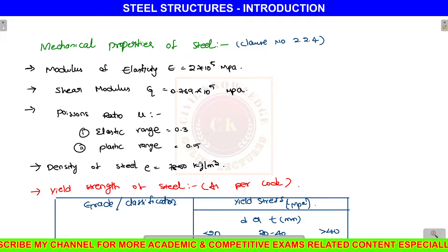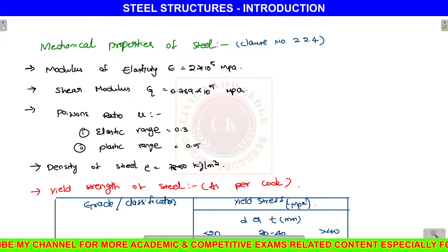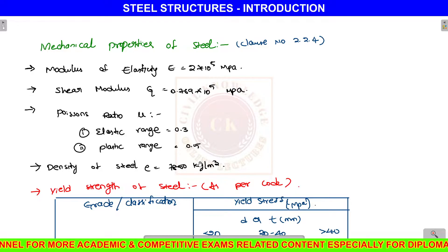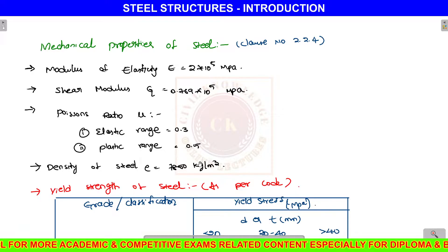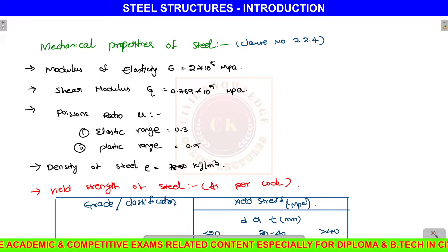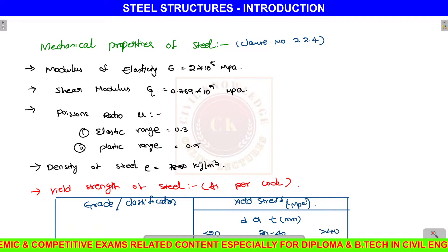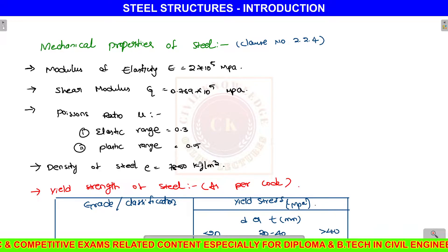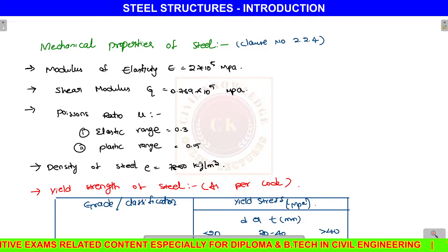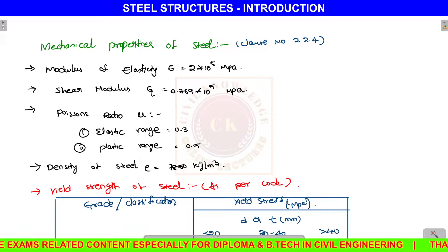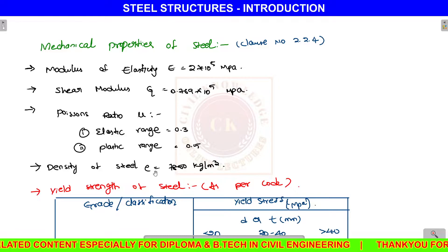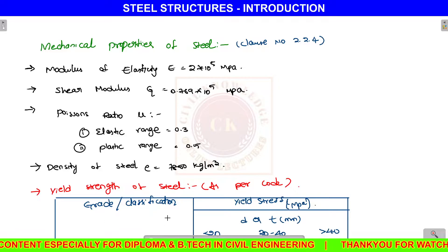Hello everyone. Now we are going to discuss mechanical properties of steel. Yesterday's class covered the difference between working stress method, ultimate load method, and limit state method. So here are the mechanical properties of steel.